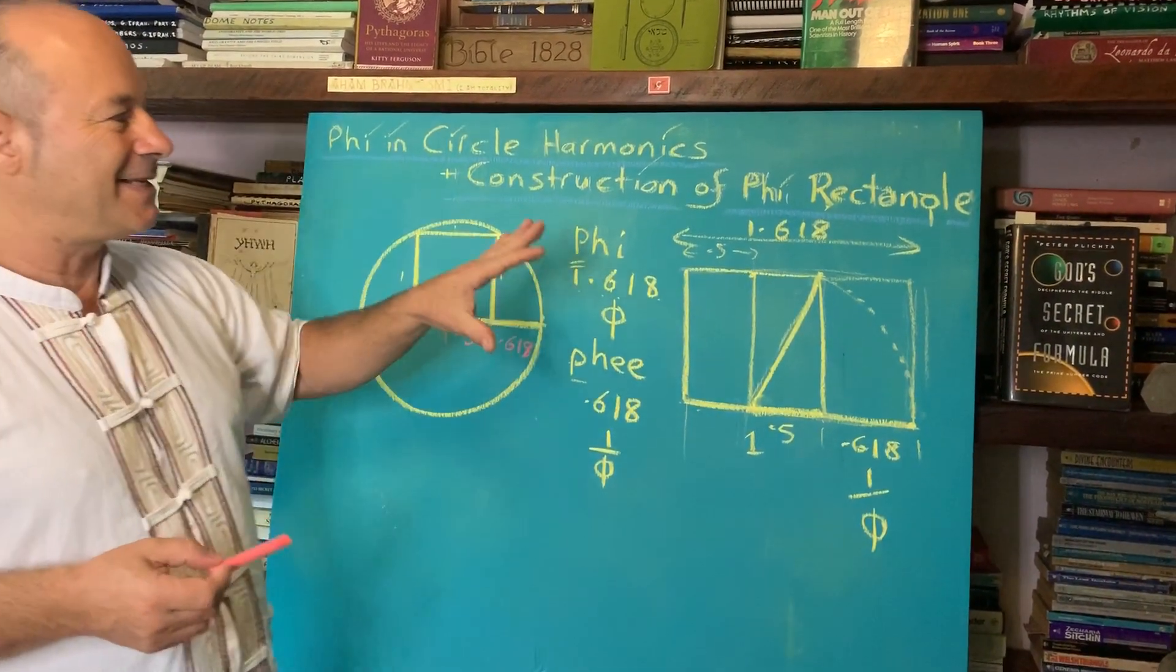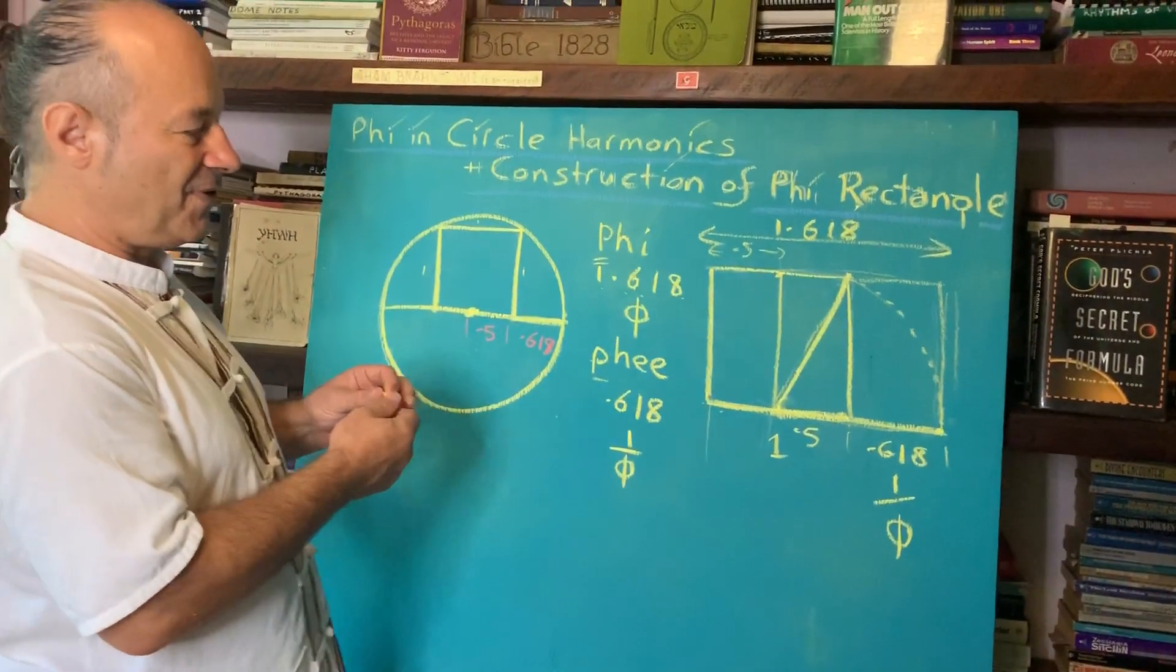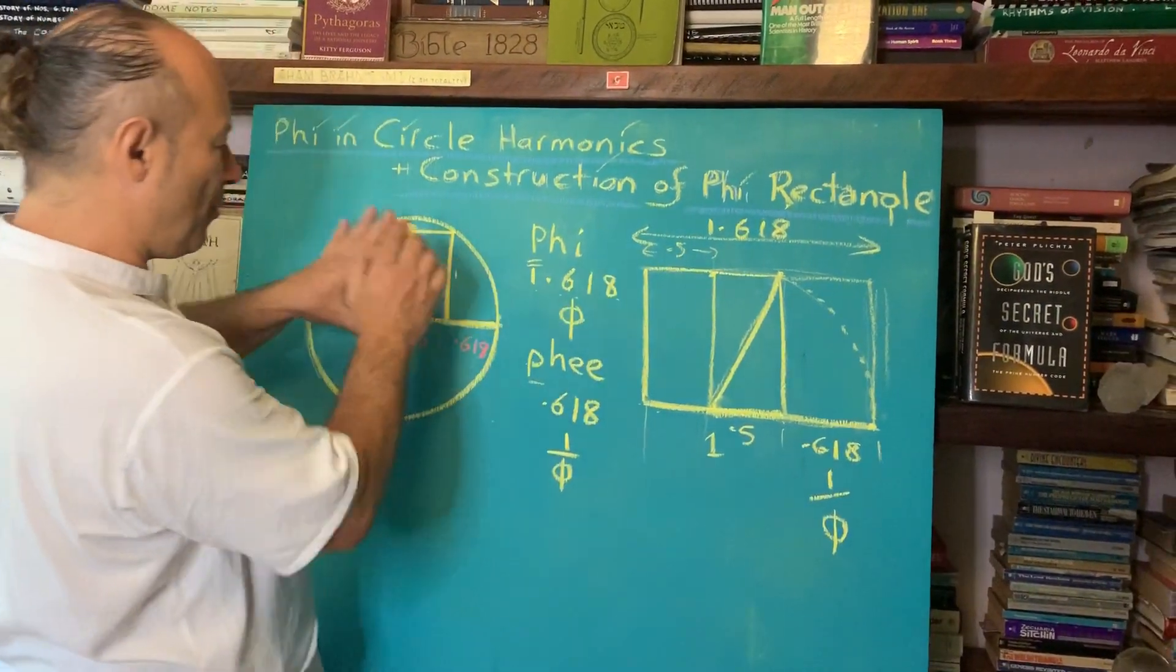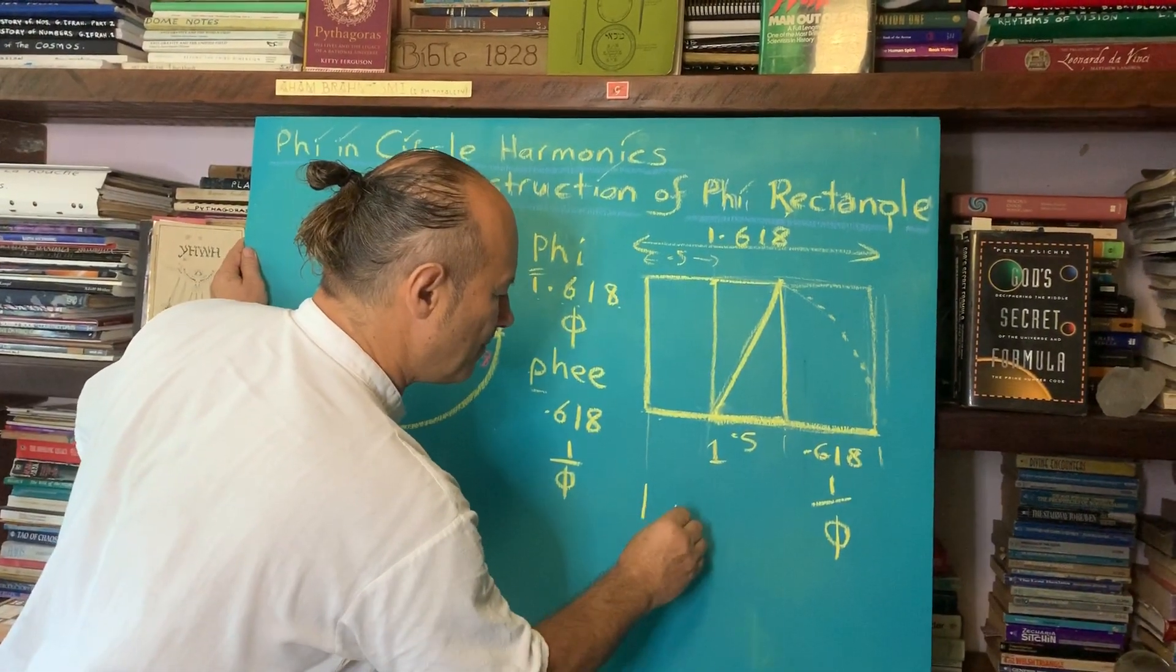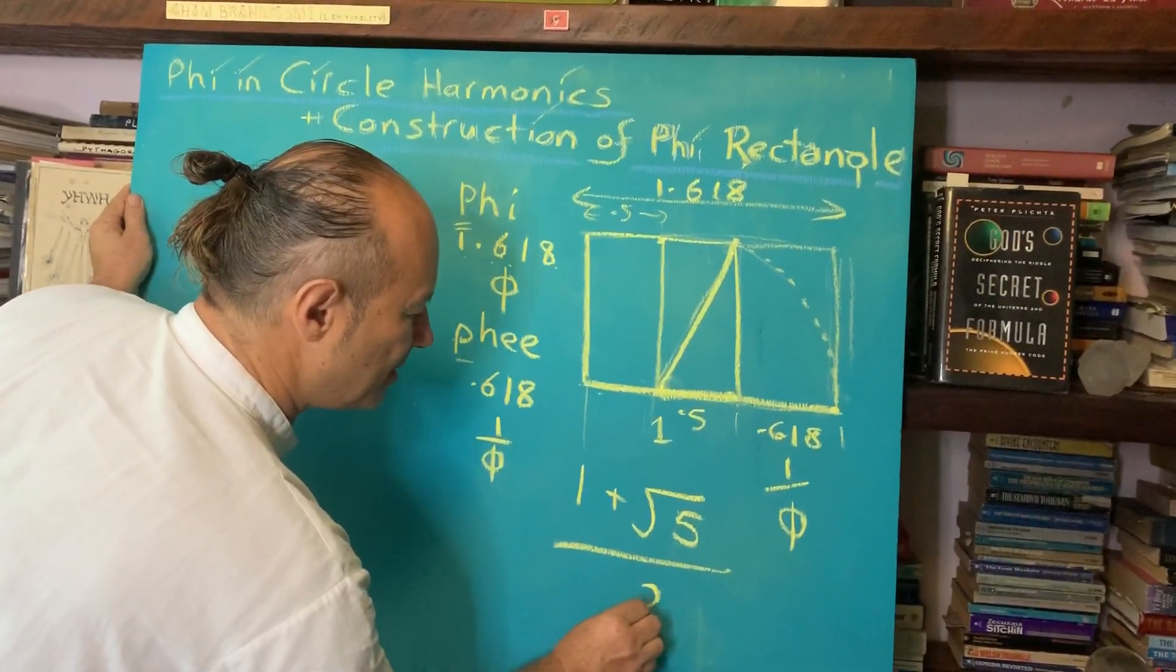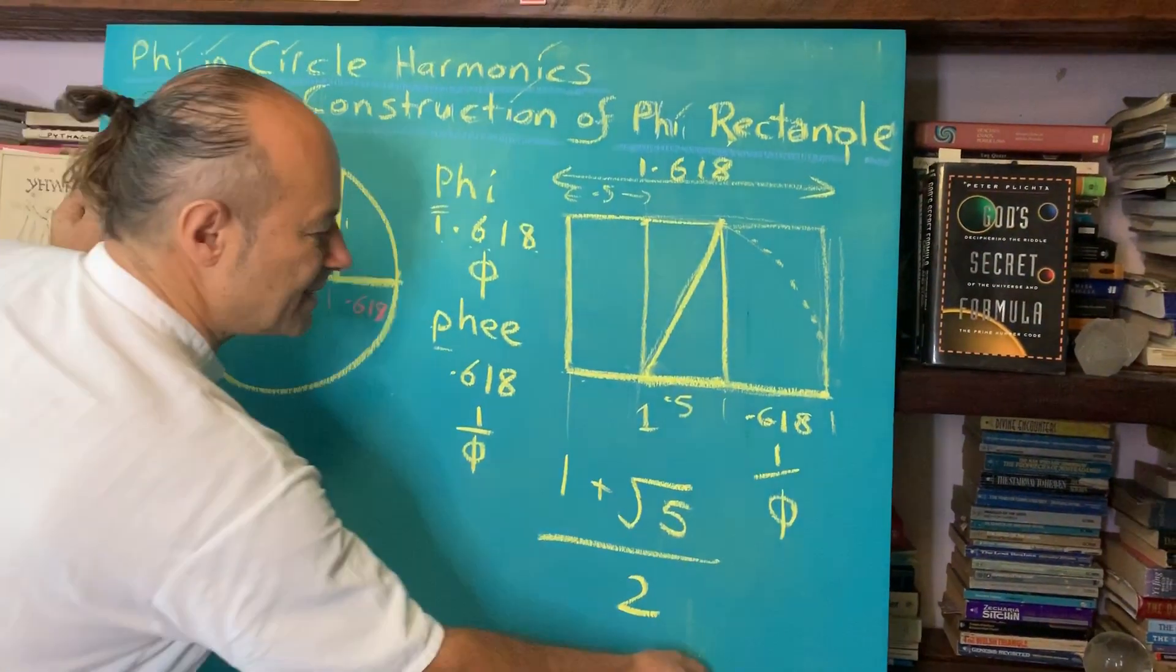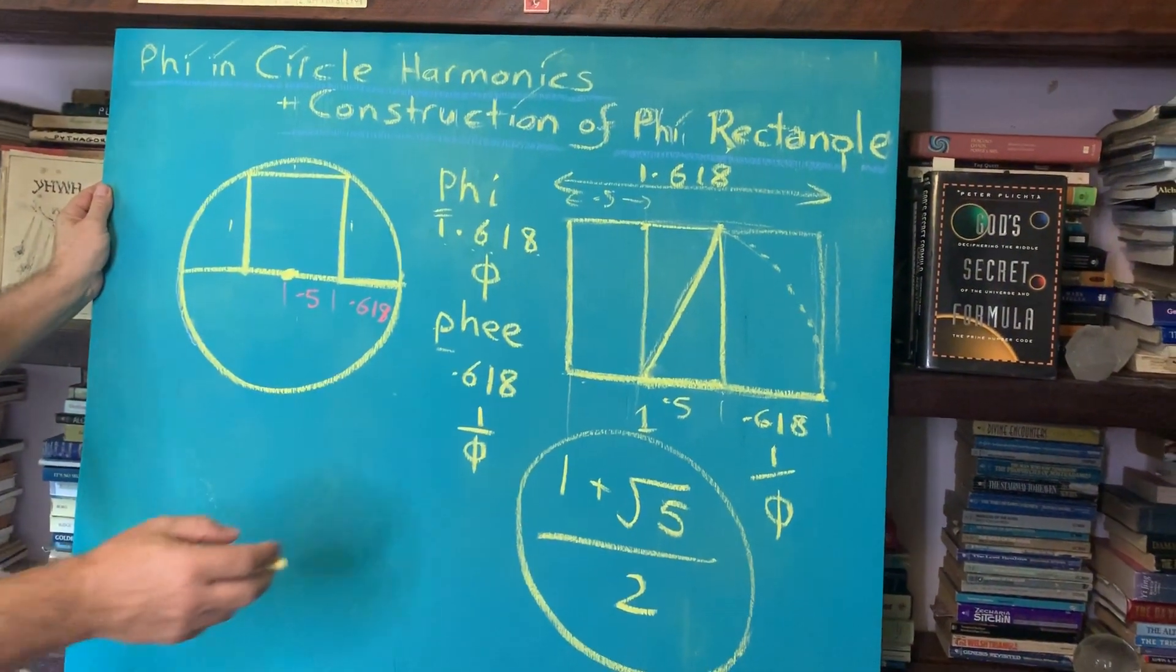I wanted to repeat this basic information. We take the formula for the golden ratio, phi, which is 1 plus the square root of 5 divided by 2. This is the critical formula.